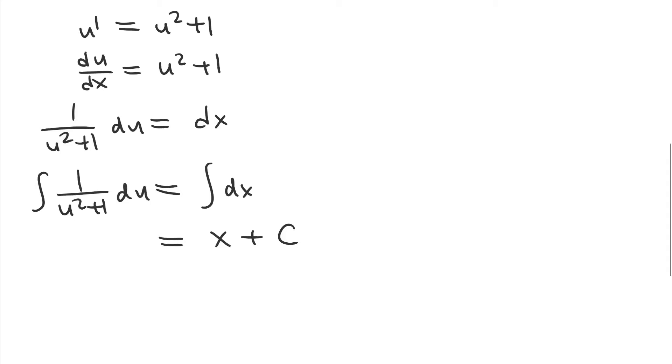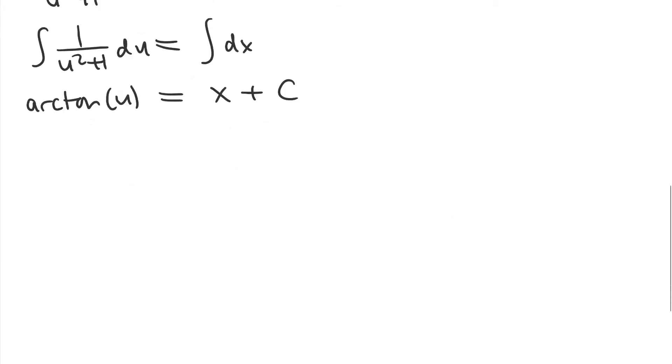On the left-hand side, this is one of those integrals you kind of just have to know and remember over time. This is the arctangent of u. The integral of 1/(u² + 1) is arctan(u). Now we really want the equation in terms of x and y, not x and u. So I'm going to substitute back in: arctan(x + y - 2). The right-hand side stays the same.